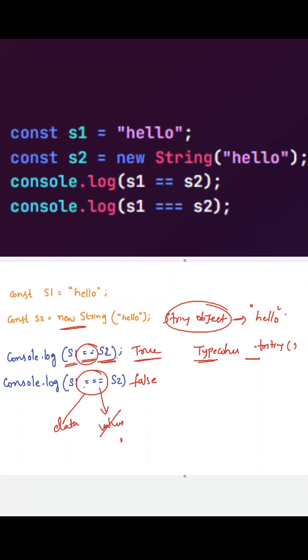Here both of these will have the same value hello. But the data type of S1 is string, whereas the data type of S2 is an object. So due to this, it will return false to us.